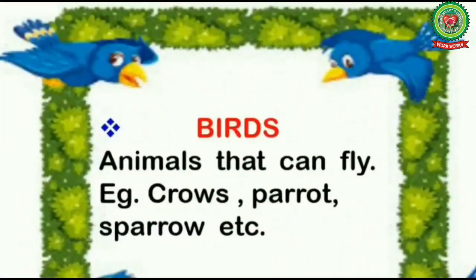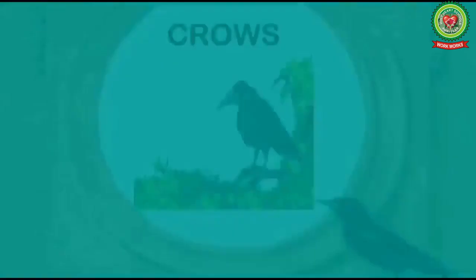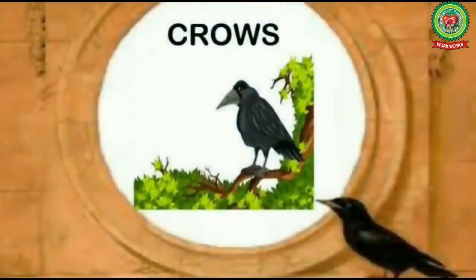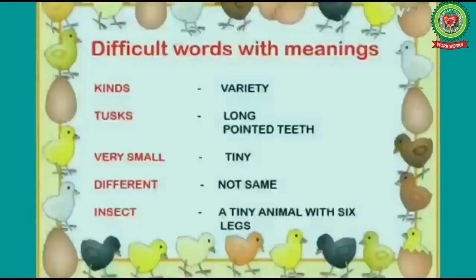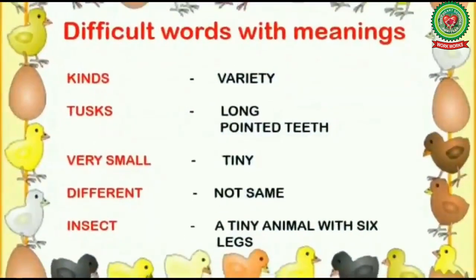Our next term is birds — animals that can fly. Examples: crows, parrot, sparrow, etc. They all are birds and they all can fly. Now we will discuss the difficult words with their meanings.